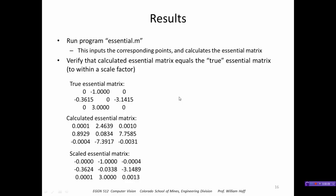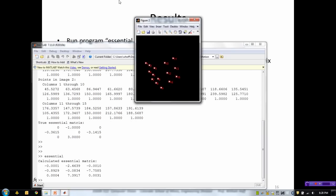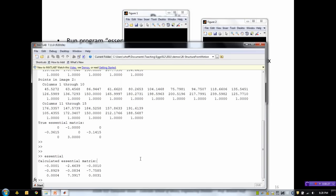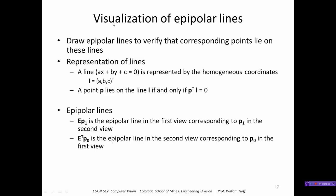So let me run that program, it's called essential.m. There's the two sets of points and here is the essential matrix that it calculated just like before. I'd like to just verify that these epipolar lines make sense. Recall from our discussion of stereo that...